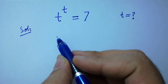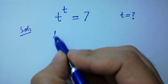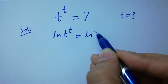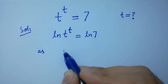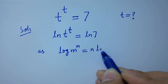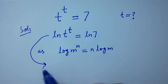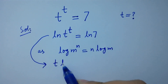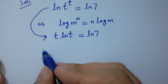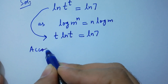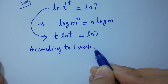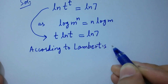To solve this, take natural log on both sides: ln(t^t) = ln 7. As we know, log m to the power n equals n log m, so it becomes t·ln t = ln 7, according to Lambert's W function.